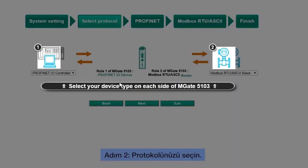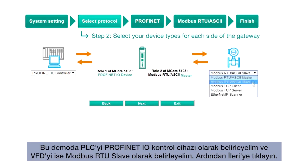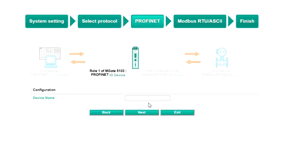Step 2, select protocol. In this demo, the PLC should be set as a ProfiNet I/O controller and the VFD as a Modbus RTU slave. Click Next to continue.